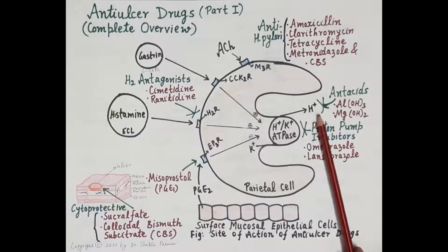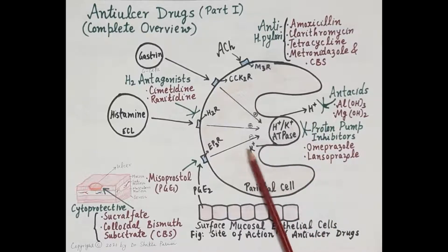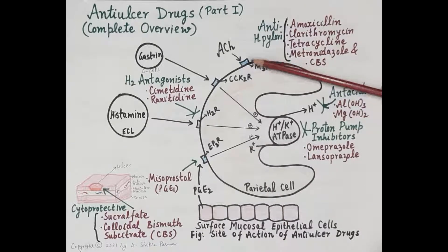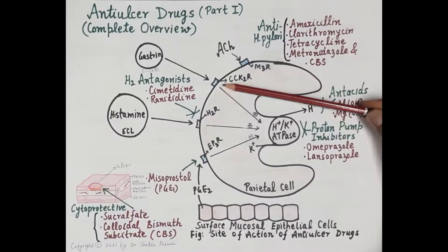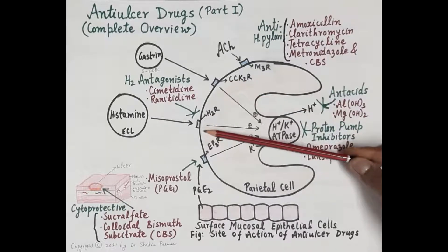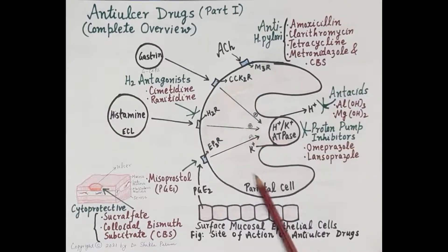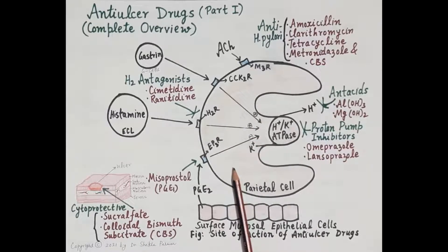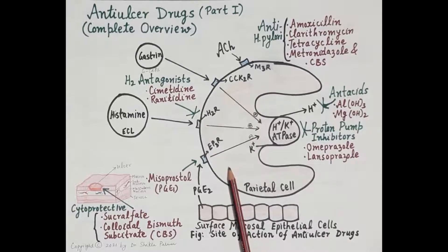The parietal cells, and thus the proton pump, are stimulated by the binding of acetylcholine to the parietal cell, by the binding of gastrin to the parietal cell, and by the binding of histamine to the parietal cell. Thus, parietal cells are stimulated to release acid by acetylcholine, gastrin, and histamine.